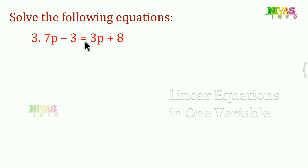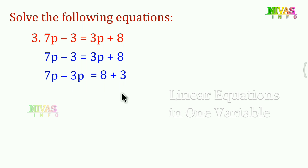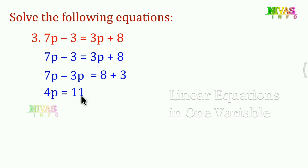The third problem is very easy. 7p minus 3 is equal to 3p plus 8. Same thing — we transpose. 7p minus 3p on the left side. Negative 3 goes to the right: 8 plus 3. 7p minus 3p is 4p. 8 plus 3 is 11. So 4p is equal to 11.